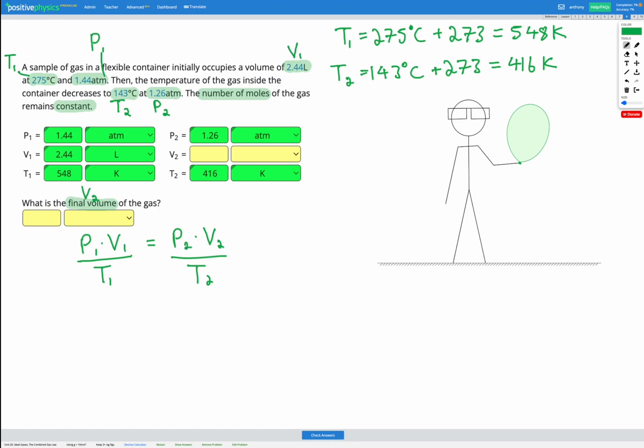Now, V2 is currently divided by T2. So if I multiply by T2 on both sides, that's going to cancel out. V2 is also currently multiplied by P2. So if I divide by P2 on both sides, the P2 will cancel out as well, leaving just V2 on its own, which is what I want.